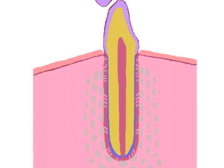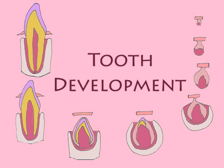Unlike enamel, dentin and cementum can continue to form as long as there are viable cells. The periodontium and alveolar bone are constantly remodeled throughout the life of the developed tooth. What follows is an uninterrupted review of the animation on tooth development.